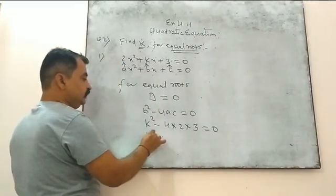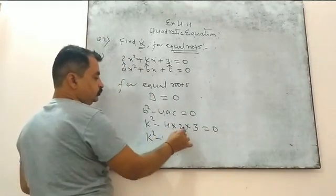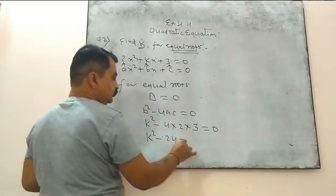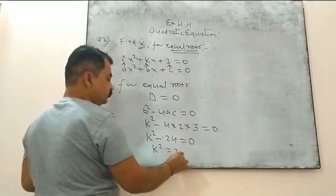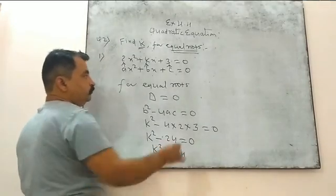What do we get here? K² - 4, 2 is 8, 3 is 24, equal to 0. What do we get here? K² = 24.